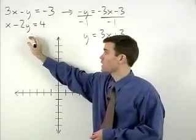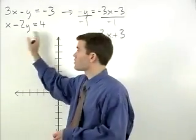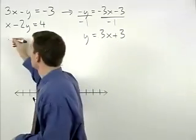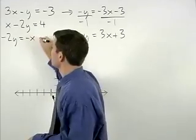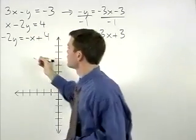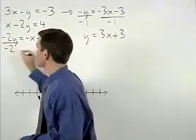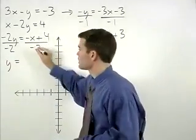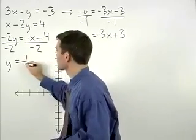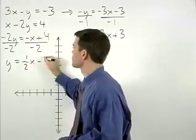For our second equation, subtract x from both sides to get negative 2y equals negative x plus 4. Divide both sides by negative 2 and y equals positive 1 half x minus 2.